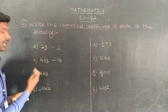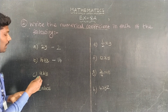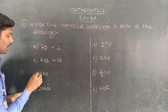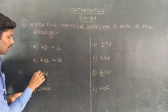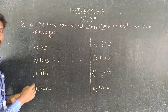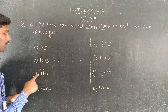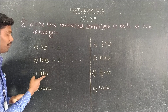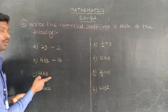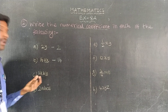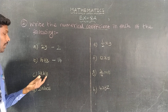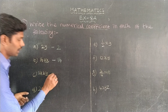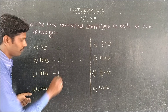This is a numerical coefficient. 1 is the coefficient for a, b, y. This is a numerical coefficient — 1.